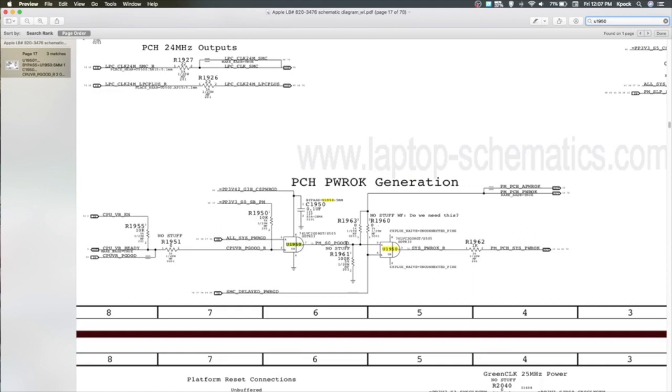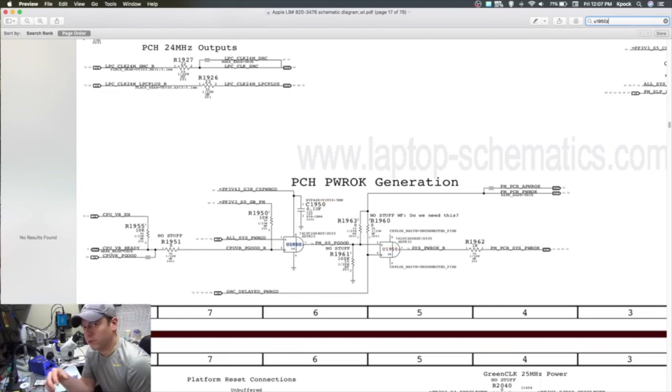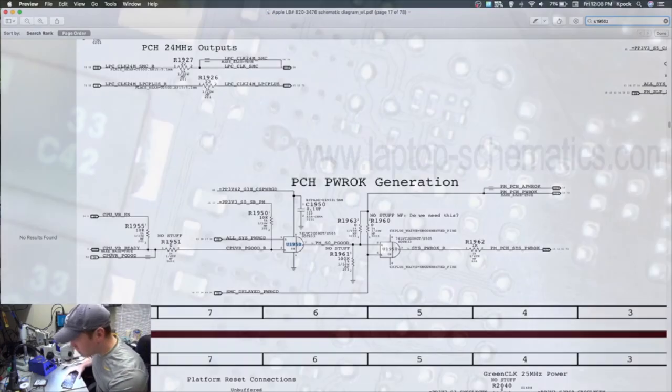So when you see liquid damage like this, you see corrosion, it's best just to take the chips off, replace them, and see what happens. Because you don't want to leave corroded chips on there anyway, so we might as well go ahead and replace them and see if we have a different outcome. See if we got power to the CPU. So let's go on back over here to the microscope.